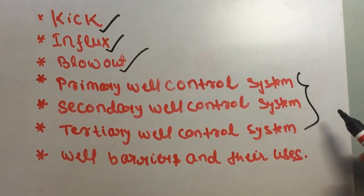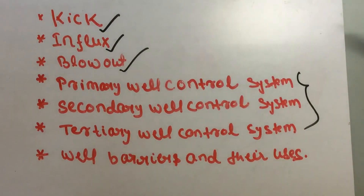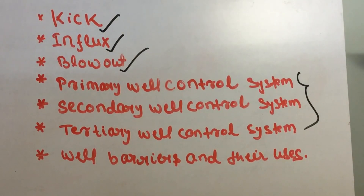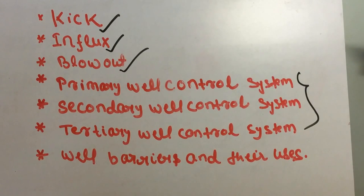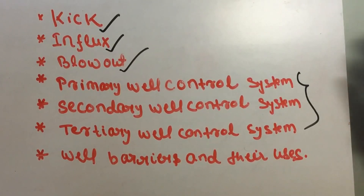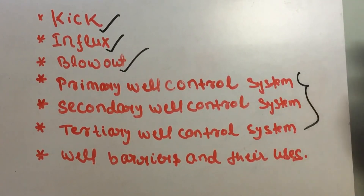These three topics — kick, influx, and blowout — are controlled by the well control systems. In the primary well control system, we maintain our BHP with the help of hydrostatic pressure. The primary system is our mud system. By maintaining proper mud density, we ensure that formation pressure does not exceed our BHP.